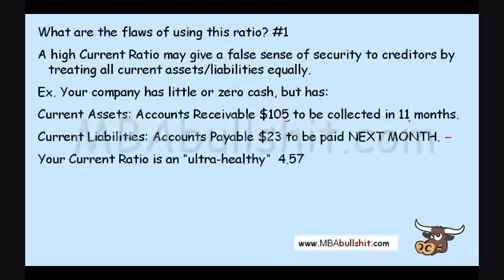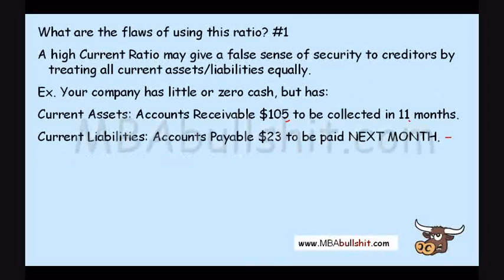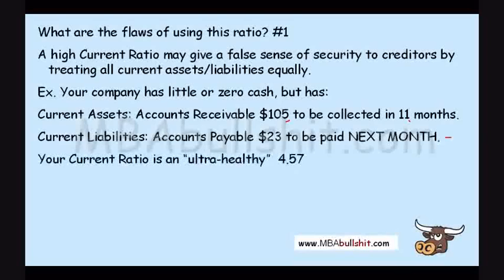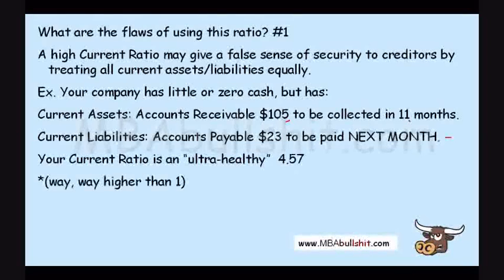But at the same time, your company has current liabilities in the form of accounts payable of only $23 — much less than $105 — but this needs to be paid next month. If you calculate the current ratio, it comes out to an ultra-healthy 4.57, way above the threshold of 1.